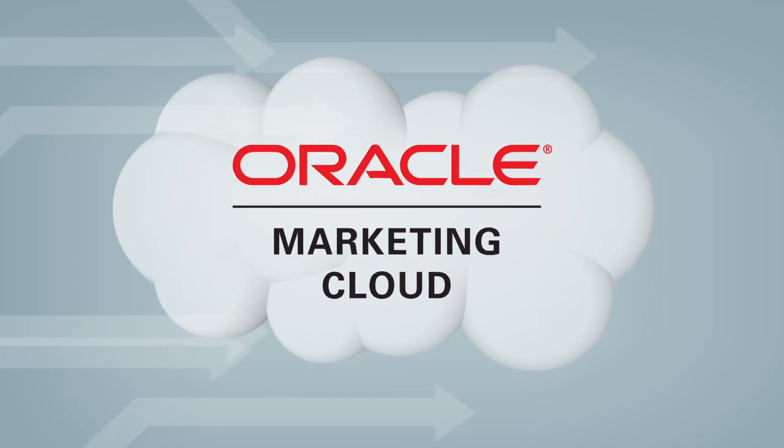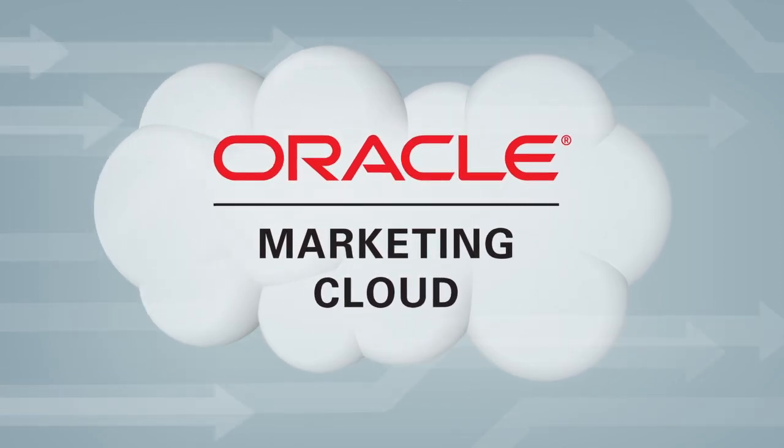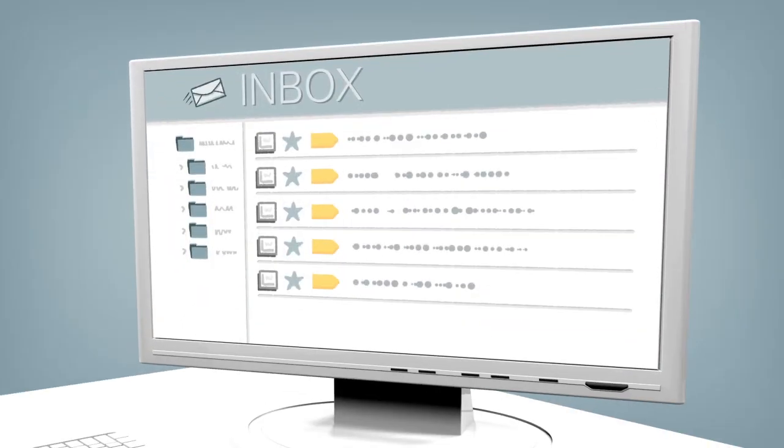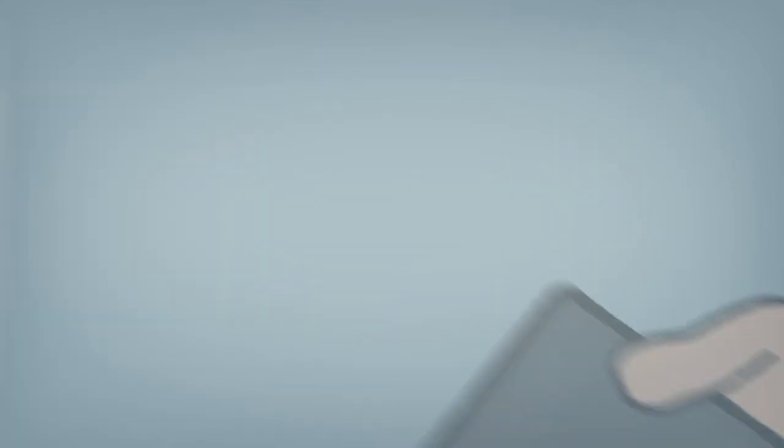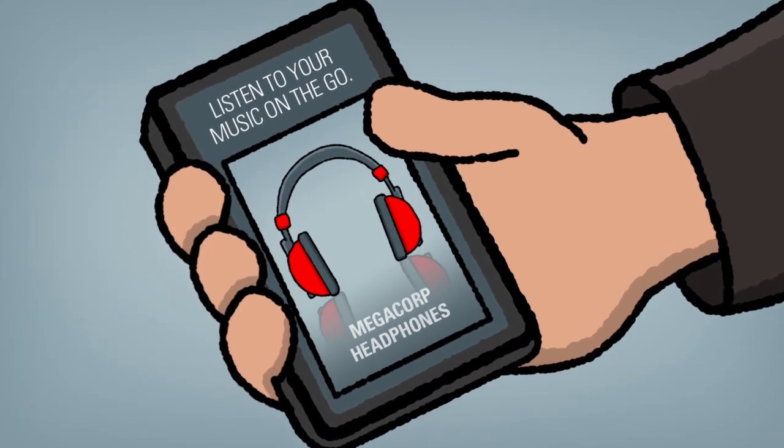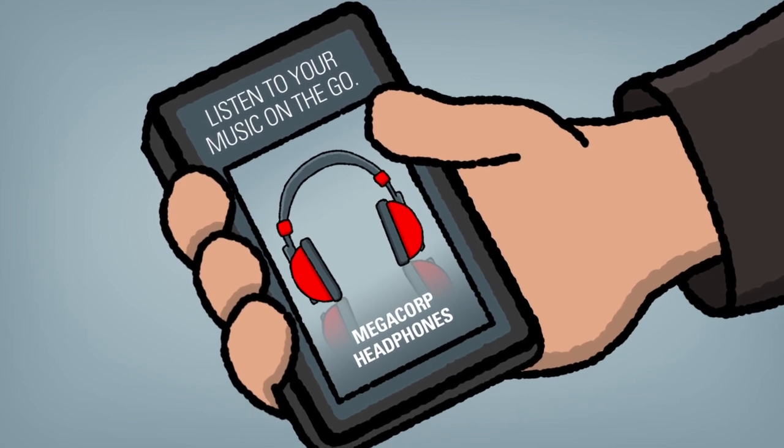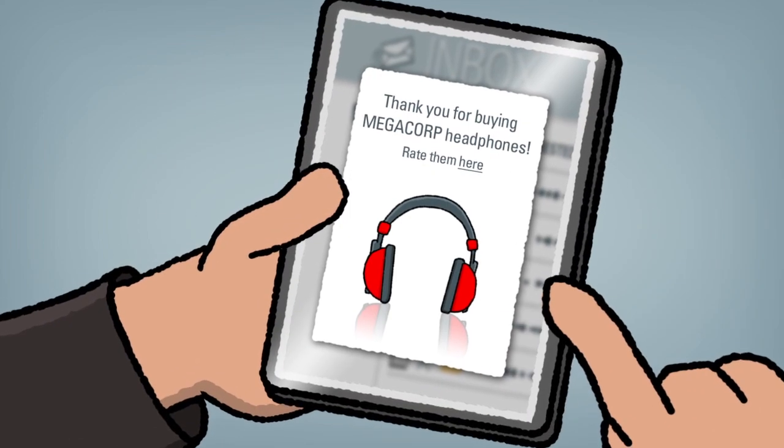Mark went on to explain that with the Oracle Marketing Cloud, things would be different. They could coordinate their efforts across all channels and stages in the buying cycle. From original content to relevant nurture campaigns, Archie gets the information he wants, how he wants it, and when he wants it.